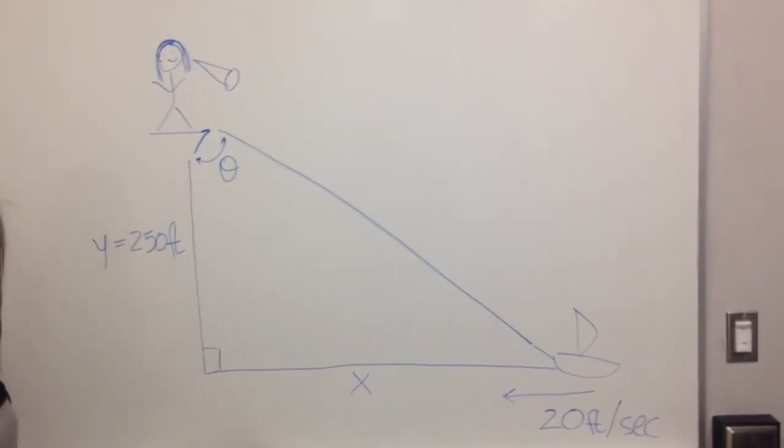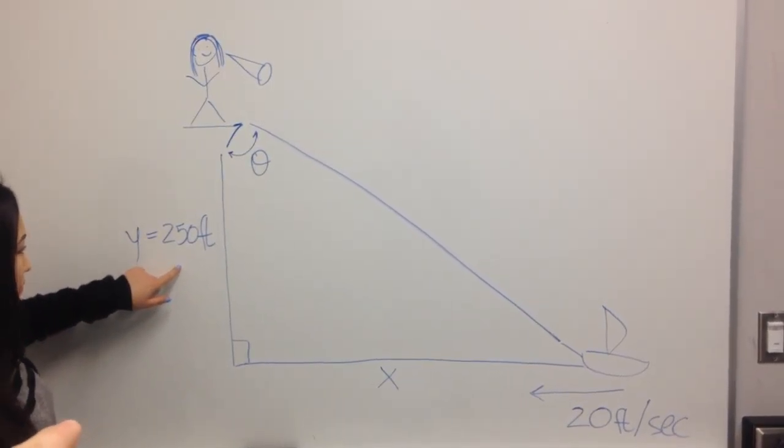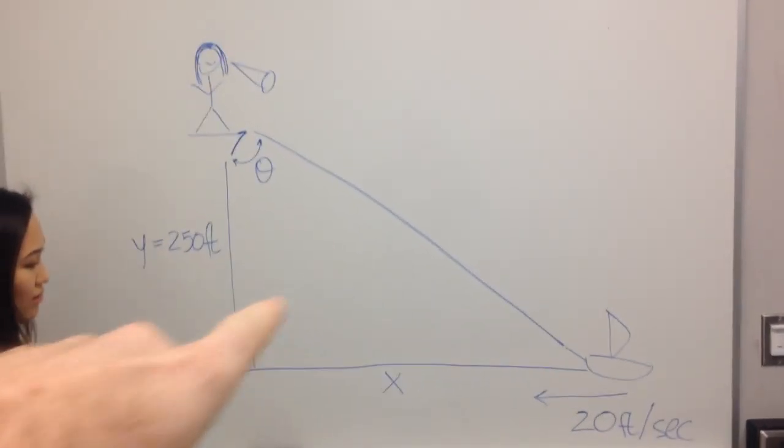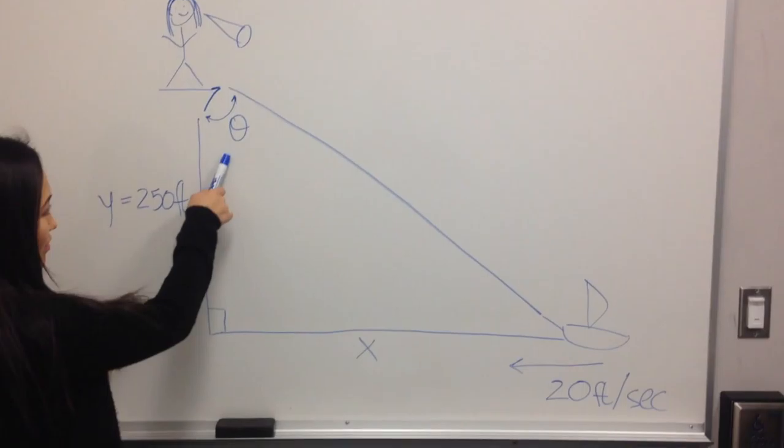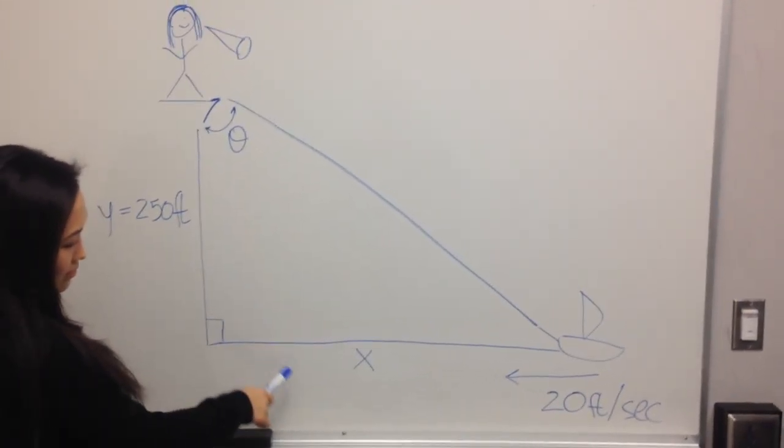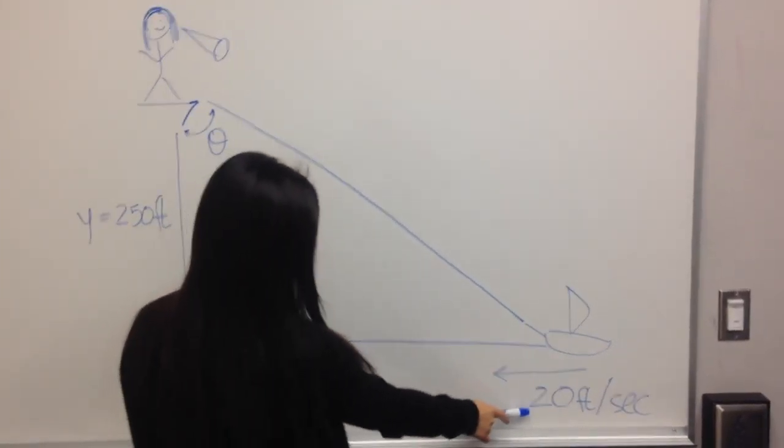Then we got 250 feet above the shore. We're trying to find angle theta and we know that the boat is moving at 20 feet per second.